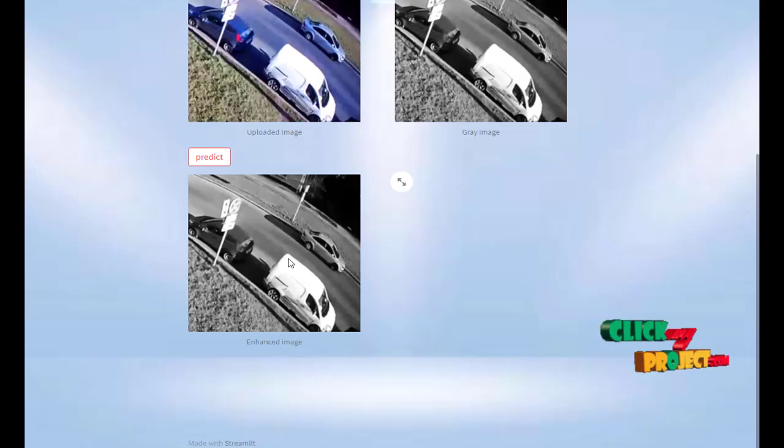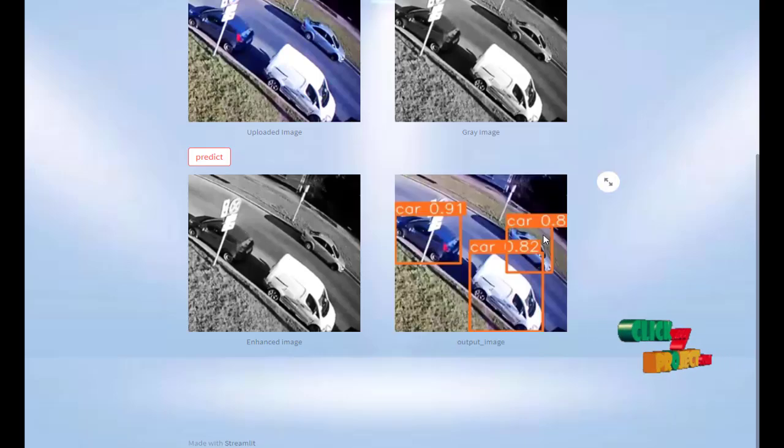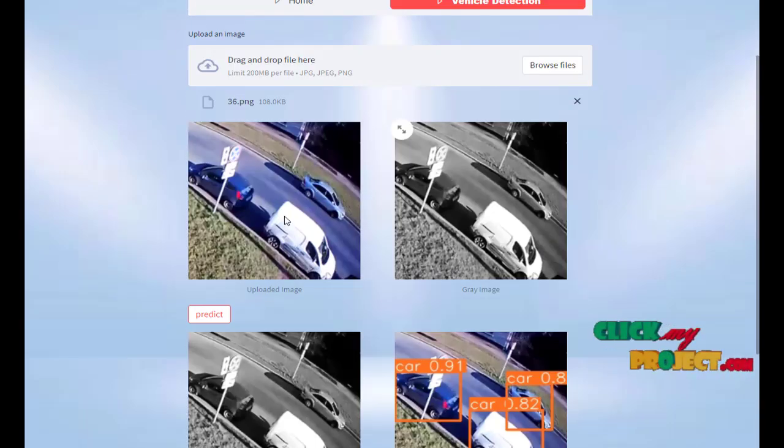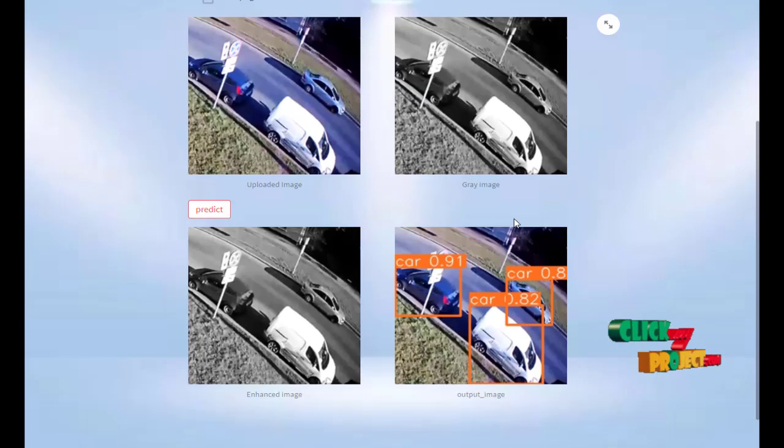First one is the image enhancement. So we have to predict the vehicles in images very easily. This is what we have to find. First one is input image, the image and image enhancement. This is the output image. What are the vehicles we have to find here?